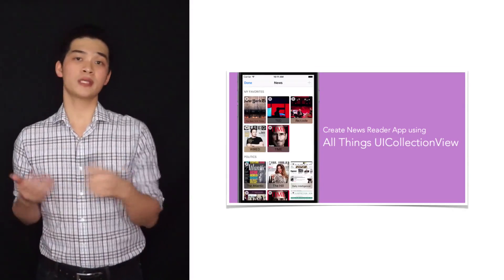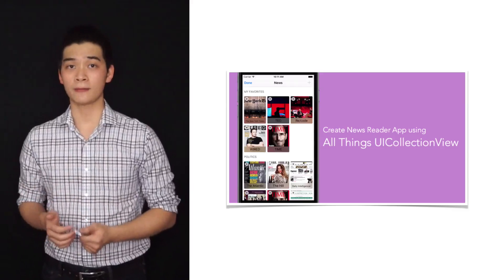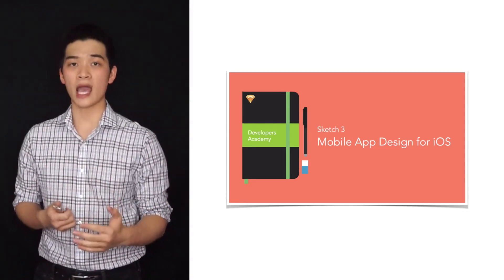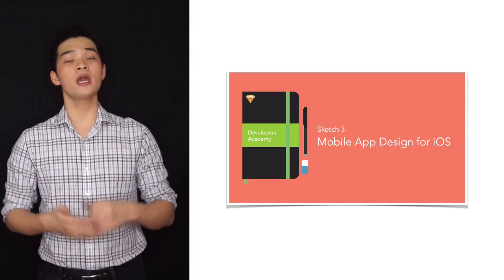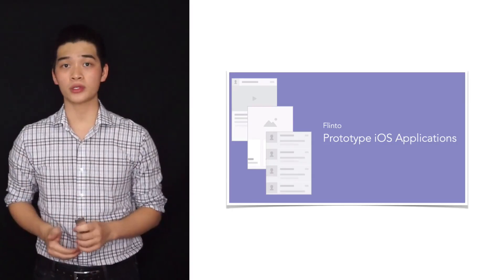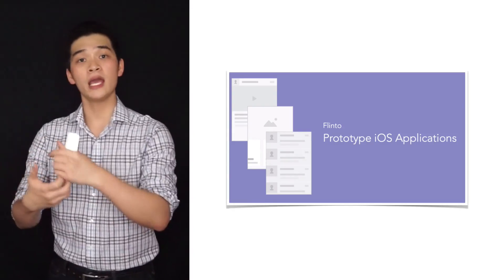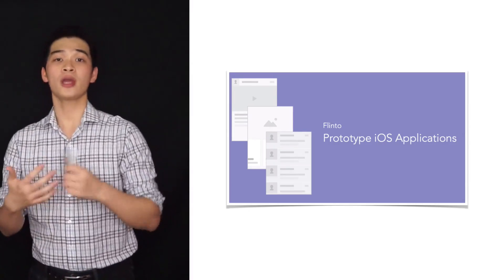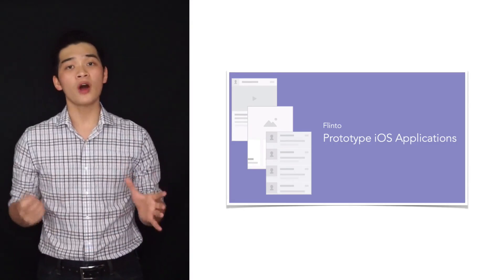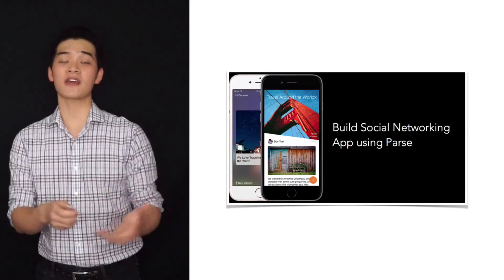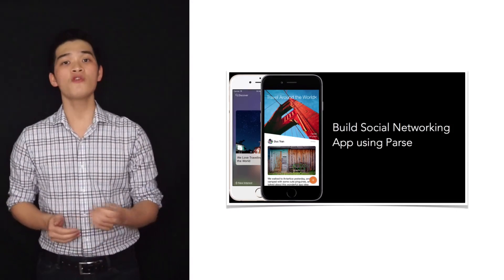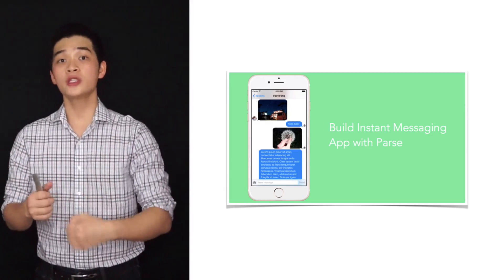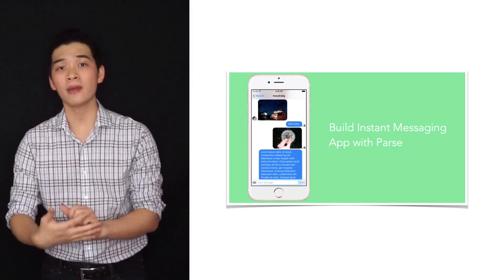Then we will build a newsreader app using collection view to create a much more flexible UI. Using that collection view and all the knowledge we've learned, we will apply these things into designing iOS apps. With that design knowledge, you will be able to make a prototype — which is not a complete app, but images with stunning interactions and animations that give you the big picture of how the app works. After that, we will move on to build a social networking app, similar to Facebook or Instagram. Then we will move on to build an instant messaging app. This is a mark for you to be able to build your own apps, and when you build your own app, it is the final product.